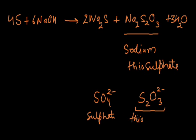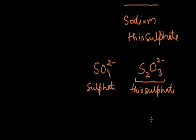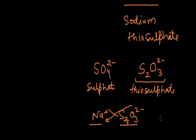This compound is thiosulfate. We can write Na⁺ and S₂O₃²⁻. This is sodium thiosulfate. We write the formula by the crisscross method, giving Na₂S₂O₃. This is the formula of sodium thiosulfate.